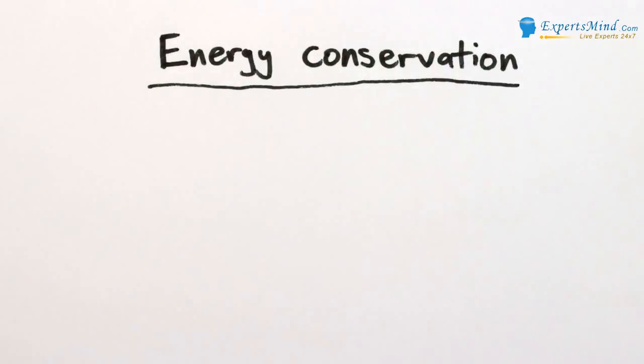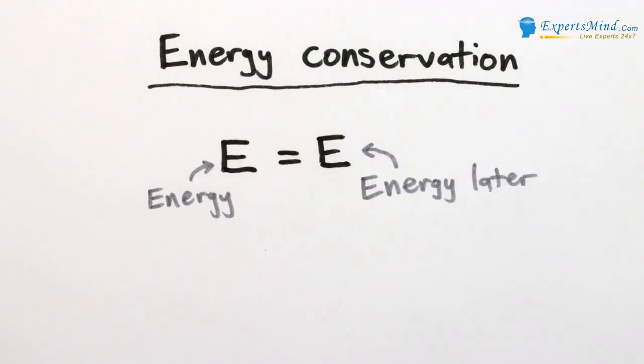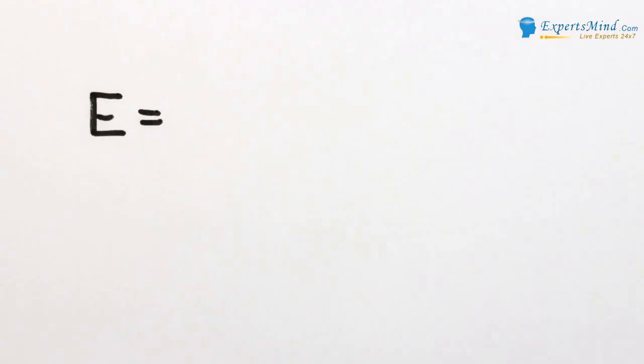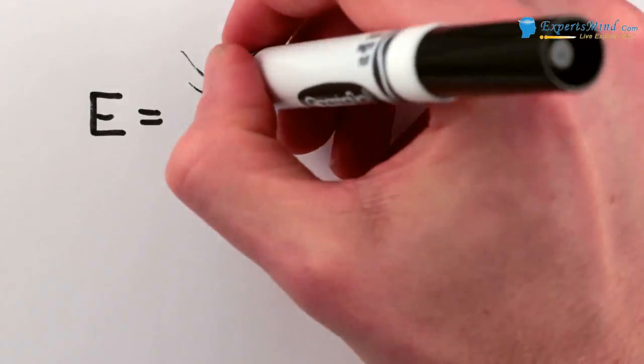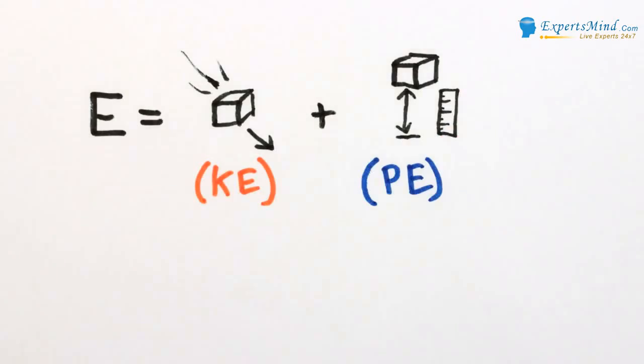First, conserving energy just means that there's a certain number, called the energy, which doesn't change as time passes. If you compare the energy at two different times, you'll see no difference. And the total energy of a system is the sum of its energy of motion, or kinetic energy, and its energy due to position, the potential energy.